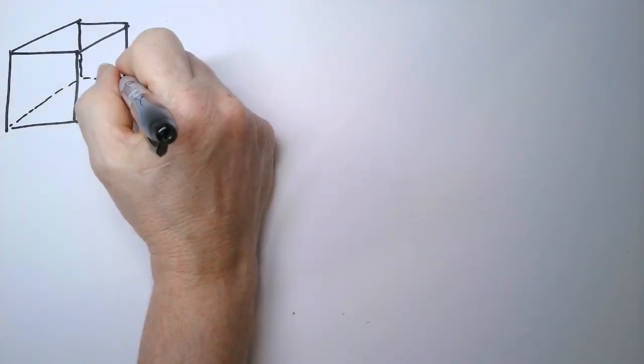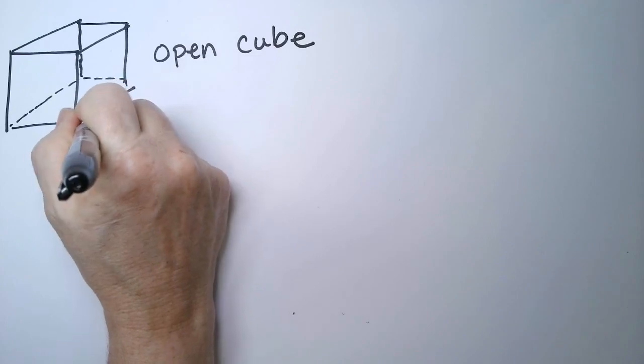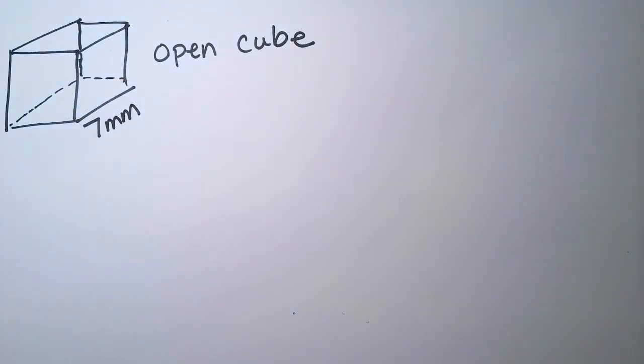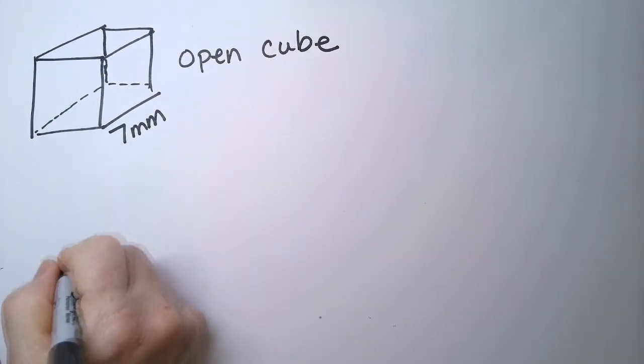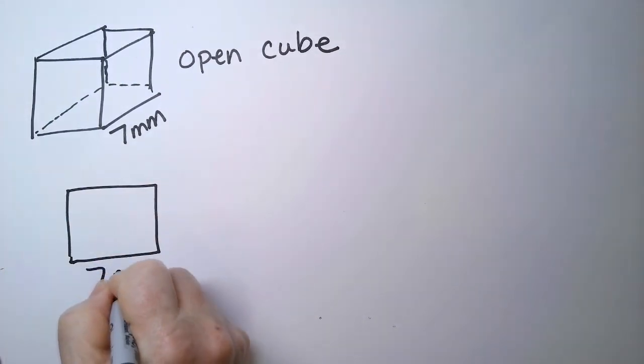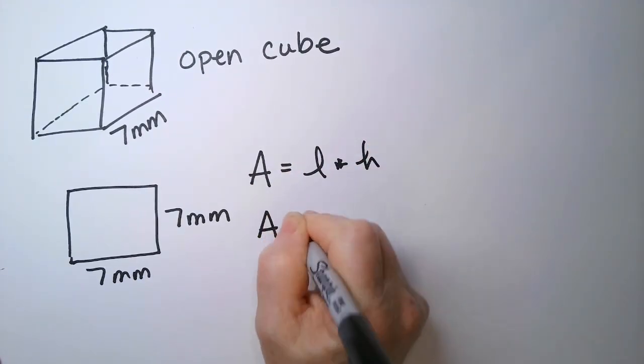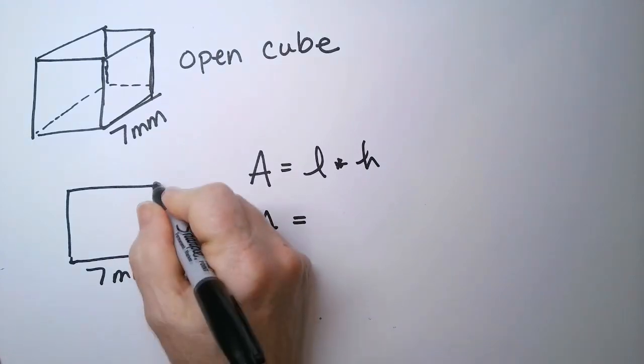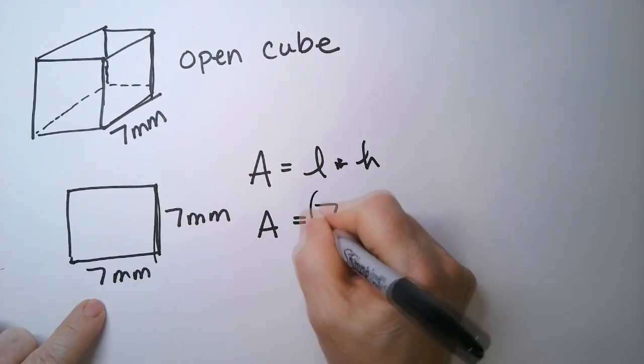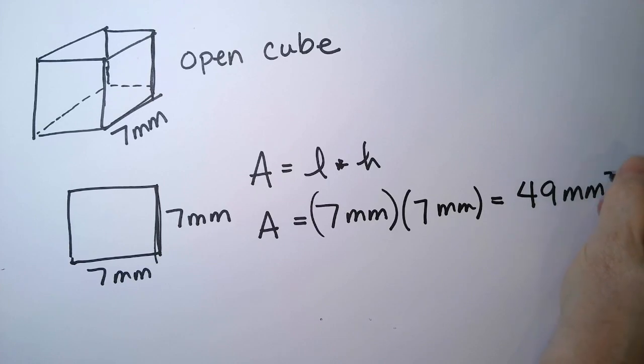So we have an open cube, and each side is 7 millimeters, it's a really small one. All right, so I want to know the total surface area, so let's just do it for one of the squares, one of the faces. So it's 7 millimeters by 7 millimeters. The area is going to be the length times the height. Area is the length times the width, whatever you've got here. So, I'm going to take this one, the length, and then the height here, which is this one right there. So I have 7 millimeters times 7 millimeters, and that's going to be 49 square millimeters.